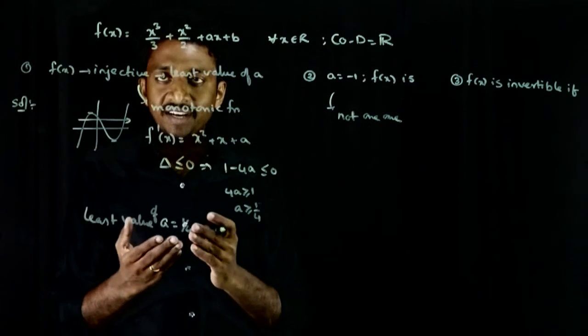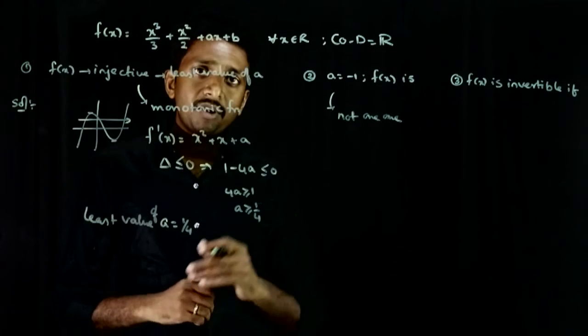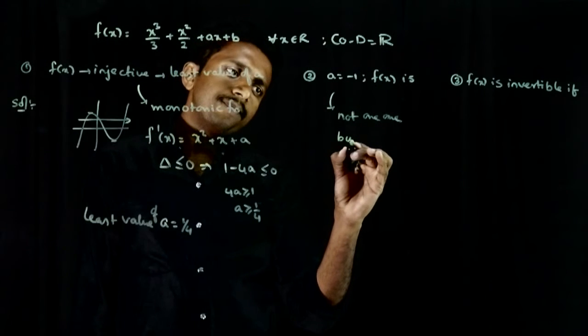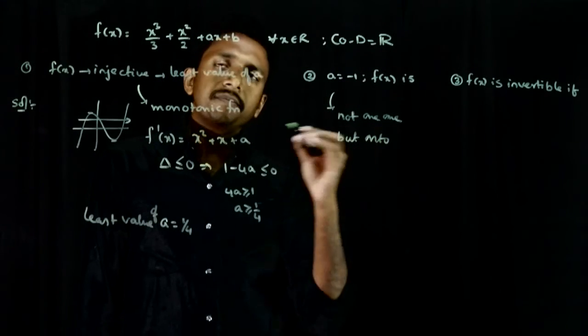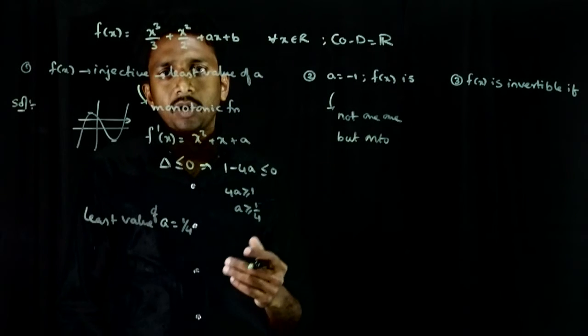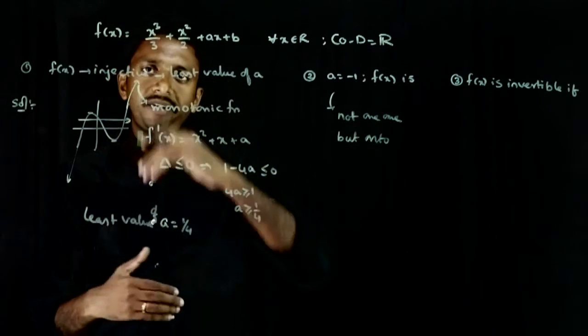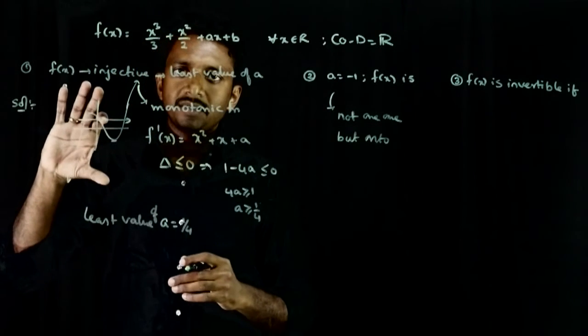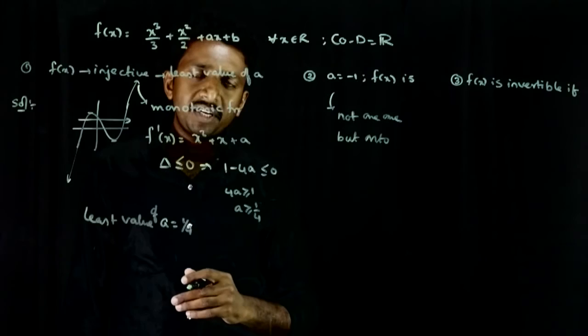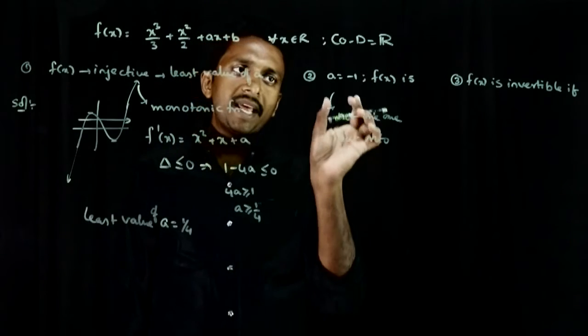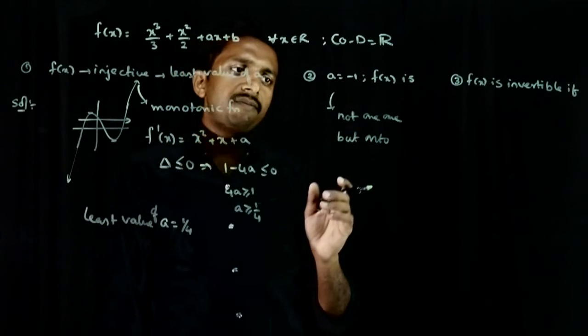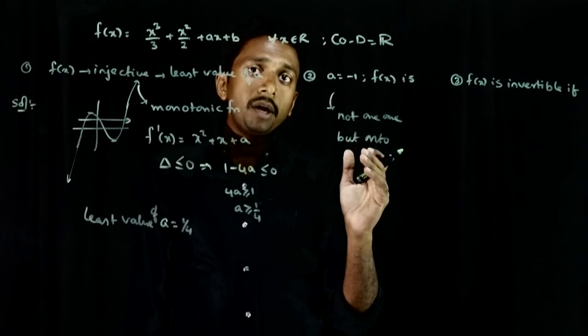When a is equal to minus one, the condition is not satisfied. So, it is not one-one, but it is onto. In a cubic function, there is no problem with onto. The cubic function goes from plus infinity to minus infinity. The entire range, all real numbers will be covered. So, at a equals minus one, the function will be onto, but not one-one.